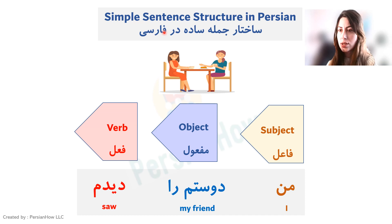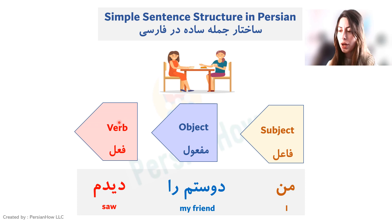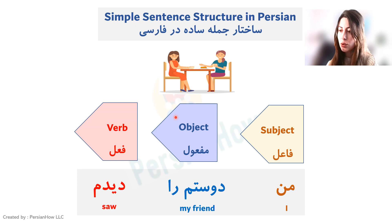Here we have a very basic and simple sentence structure with only three elements. The sentence starts with the subject, then we have the object, and then the verb — this is SOV order. In English, sentences also start with the subject, but then there's the verb, then the object (SVO). That's the key difference between Farsi and English.